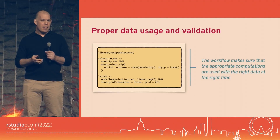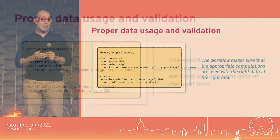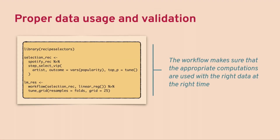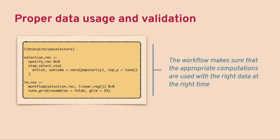As an example, here's another recipe using a recipe extension package called recipe-selectors. It has a step that will do a random forest variable importance score across your predictors, and then you can select the top 10, 15, or 30 — whatever you think — of the most important predictors and give those to, say, a linear regression model. We don't really know how many we should pick. That argument called top_p — how many predictors should I retain — we give it a value of tune(), which marks it in TidyModels as something we want to optimize.